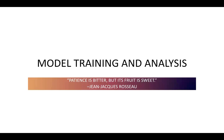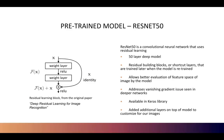Next, we moved on to model training and analysis. We started with a pre-trained model, the ResNet-50. It is a convolutional neural network that uses residual learning. It is 50 layers deep and includes residual building blocks, or shortcut layers, that are trained later when the model is retrained. This allows for better evaluation of the feature space of an image by the model. It also addresses the vanishing gradient issues seen in deeper networks.